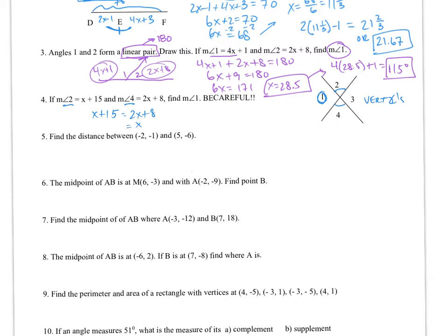So I can say 2x plus 15 equals 2x plus 8. So that means x is 7. Since x is 7, I can get angle 2. The measure of angle 2 will be 2 times 7 plus 15, which gives me 22. So if this is 22 degrees, what's angle 1? We know this is a linear pair, so that's 180. So 180 minus 22 degrees gives me 158 degrees as the measure of angle 1.